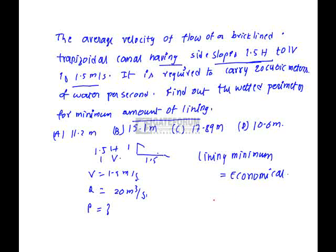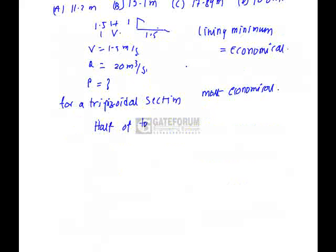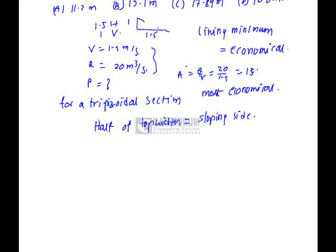For trapezoidal section, most economical section is going to be half of top width equals sloping side. From this data we can calculate the area Q by V, that is 20 by 1.5, which equals 13.3 square meters.